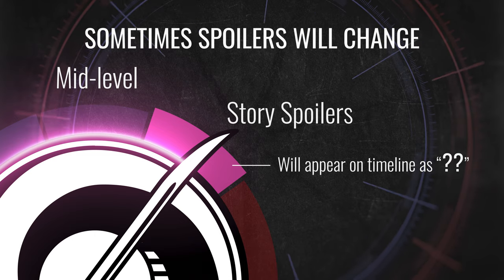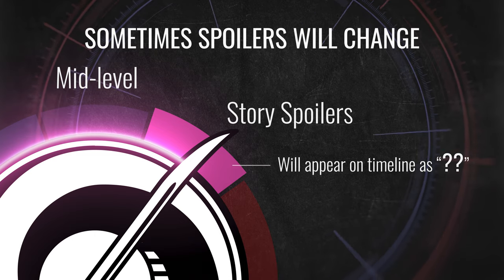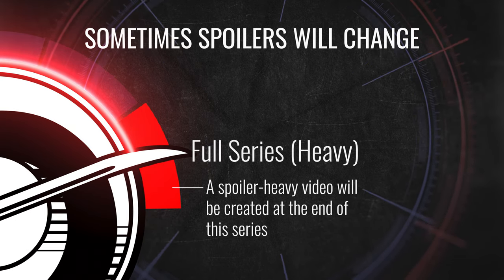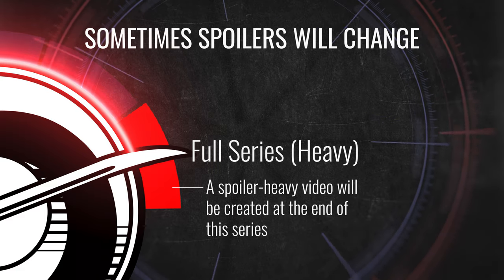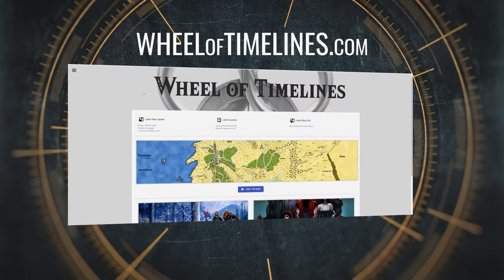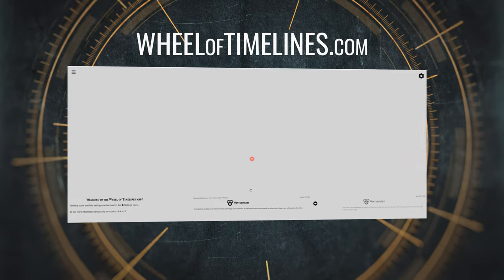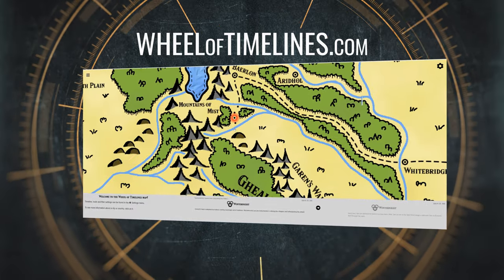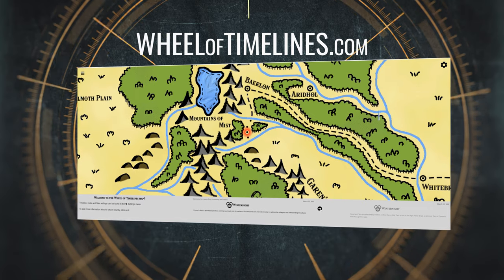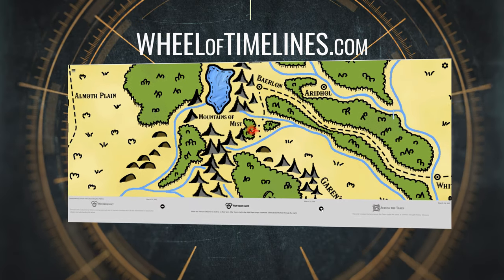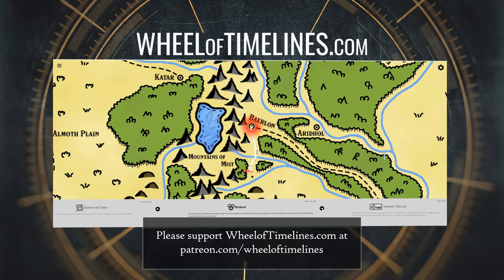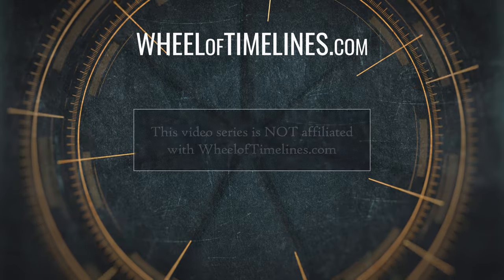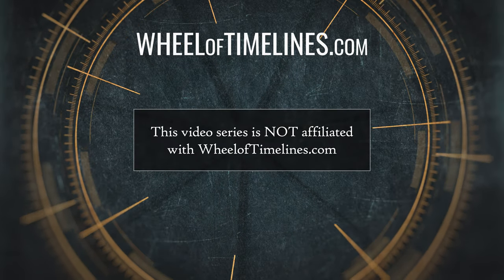These heavier spoilers will be marked on the timeline as a double question mark. Sometimes the mysteries of what happened in the past are revealed throughout the books, and I don't want to spoil them here. I'll be creating a spoiler-heavy timeline follow-up video at the end of this less spoilery series that will include these events. Note, there's a brilliant website called wheeloftimelines.com that does an in-depth breakdown of the timelines of the Wheel of Time books. I've been granted permission to use the term Wheel of Timelines for this video series, but to be clear, this series is in no way affiliated with the wheeloftimelines.com site.